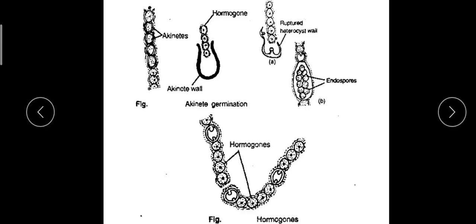The akinetes may occur singly or in long chains. When unfavorable conditions pass off and favorable conditions arrive, these akinetes germinate to form a new filament.